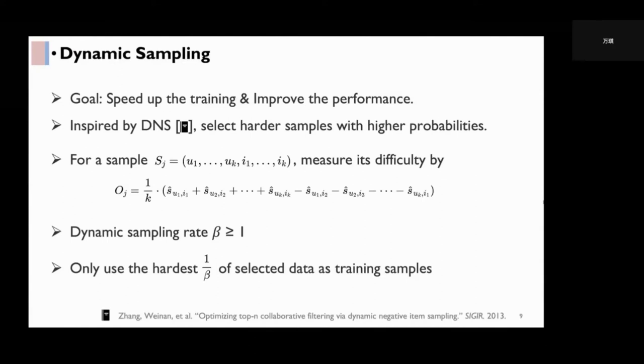We use beta to denote our dynamic sampling rate and we only use the hardest one in beta of the selected data as training samples.